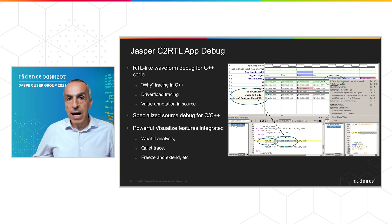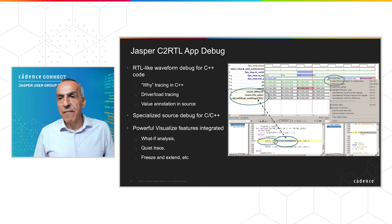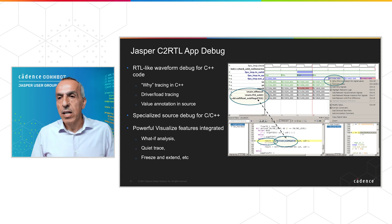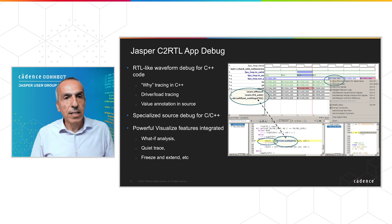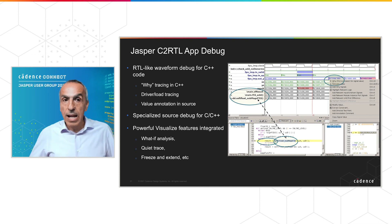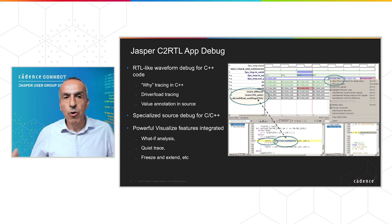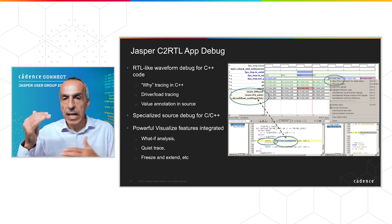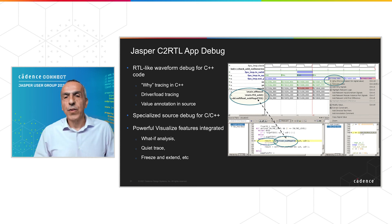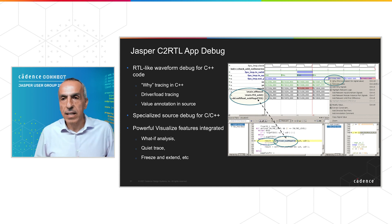For debugging and easy views, we have extended Visualize for C++, bringing all the power of features formal verification engineers rely on to the C++ level — including waveform tracing in C++, driver tracing in C++, value annotation in source code, and source debug for C++ reference models. It also has powerful Visualize features integrated for this application at the C++ level, including what-if analysis, C++ trace, C++ freeze and extend, and others.